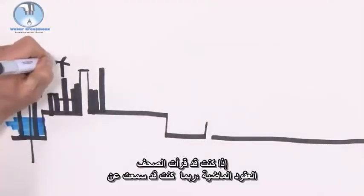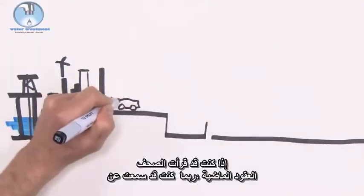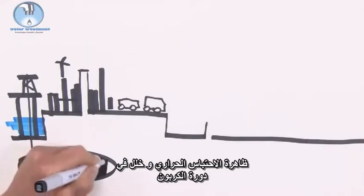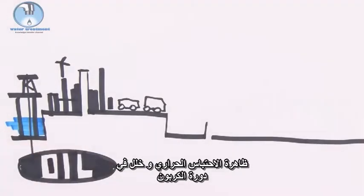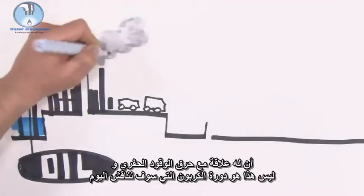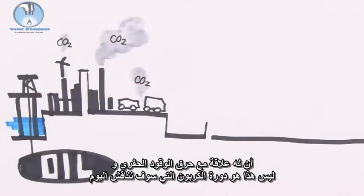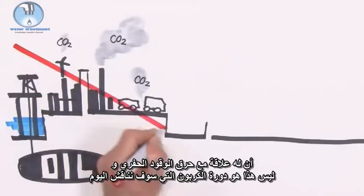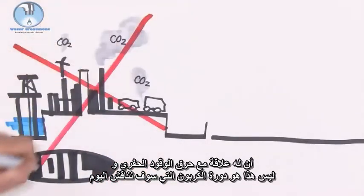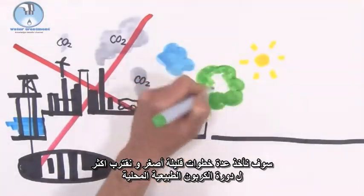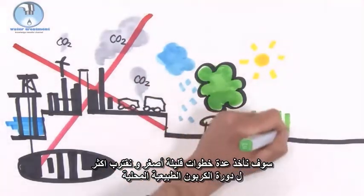If you have been reading the newspapers the last decades, you might have heard about the greenhouse effect and an imbalance in the carbon cycle. That has to do with burning fossil fuels, and that is not the carbon cycle we will discuss today. We take it a few steps smaller and zoom in to the local natural carbon cycle.